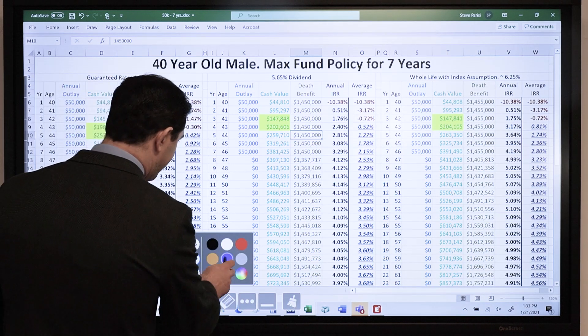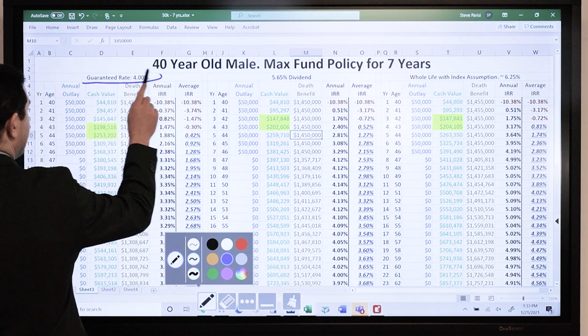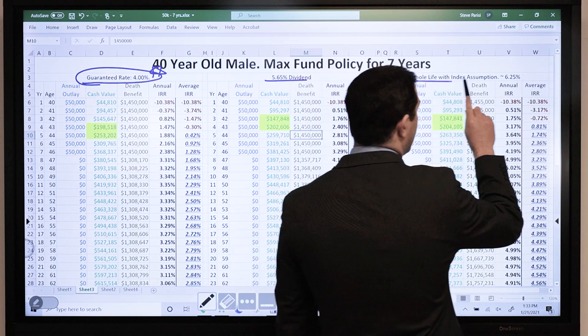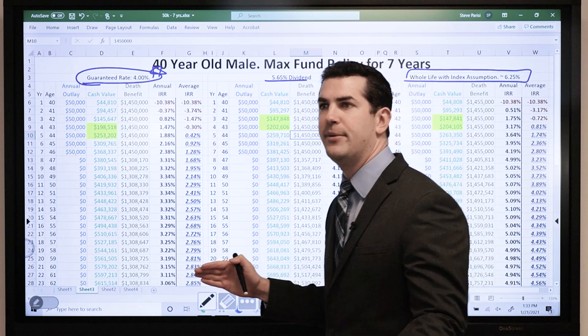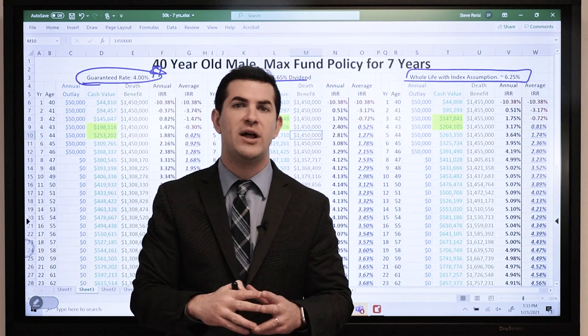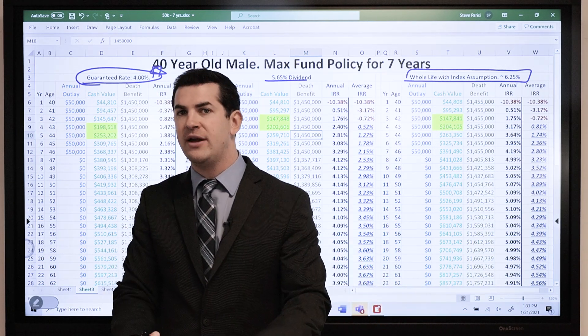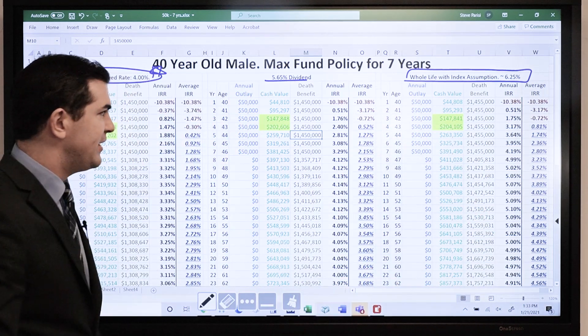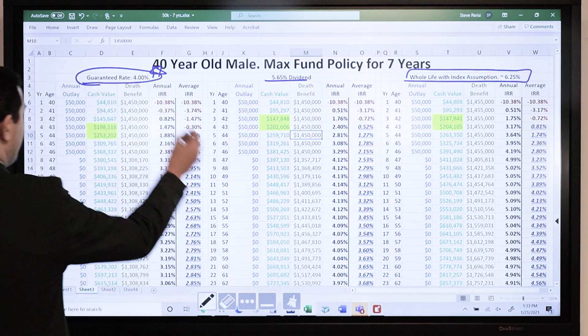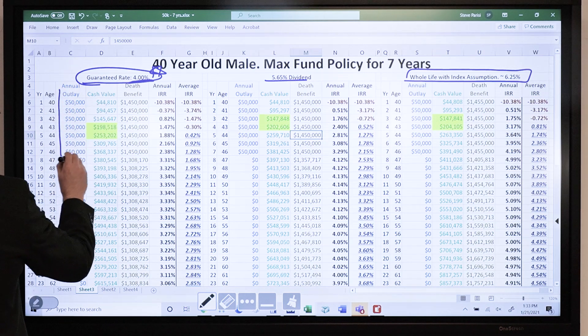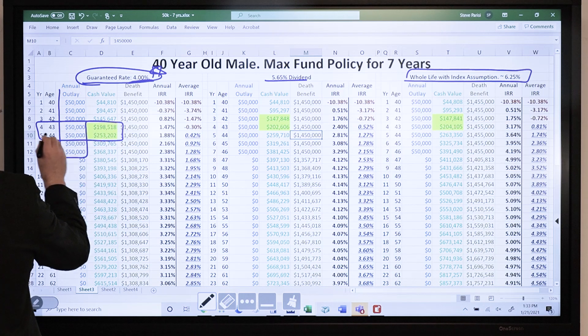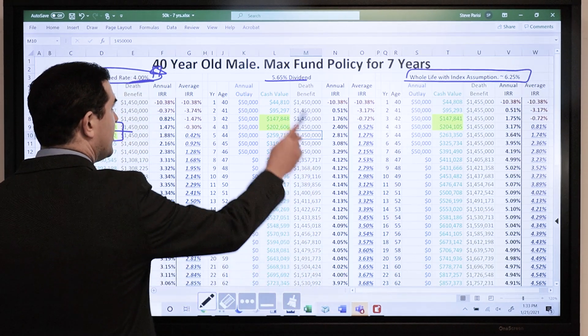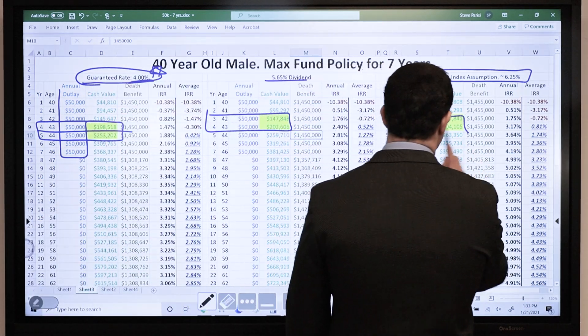Here we've got a policy, 40-year-old male funding it at $50,000 per year for 7 years. What does it look like in an absolute worst-case scenario based off the guarantees, based off of the company's present dividend rate, and then an indexed feature? Point being here is if different options exist, I want to see them all. Here's the guaranteed values. Worst case scenario, 50 per year for 7 years, breaking even between years 4 and 5, just about year 4. That is solid for a whole life insurance policy based on the guarantees. Present dividend rate between years 3 and 4, and the indexed feature still between years 3 and 4.